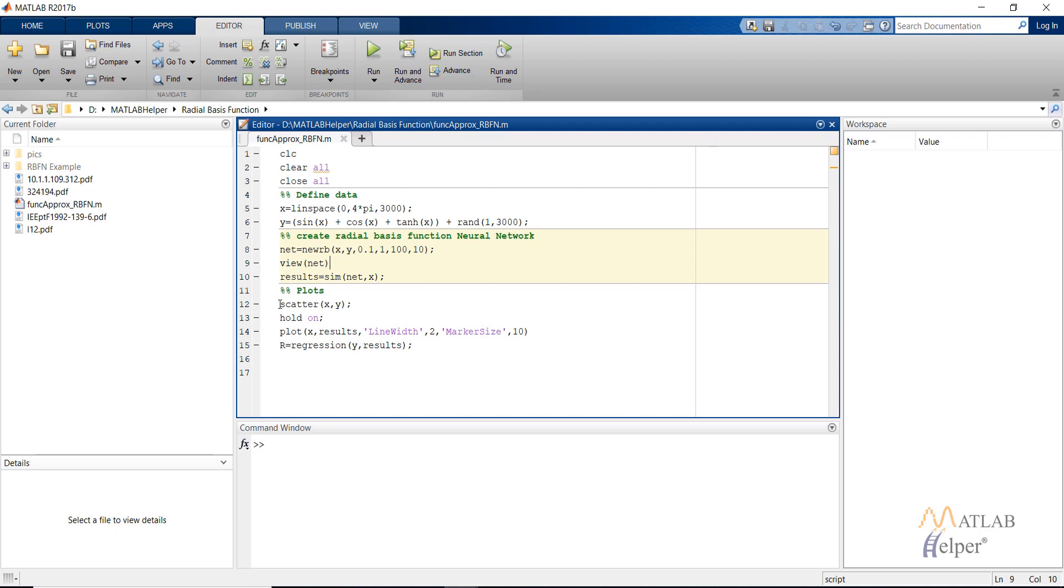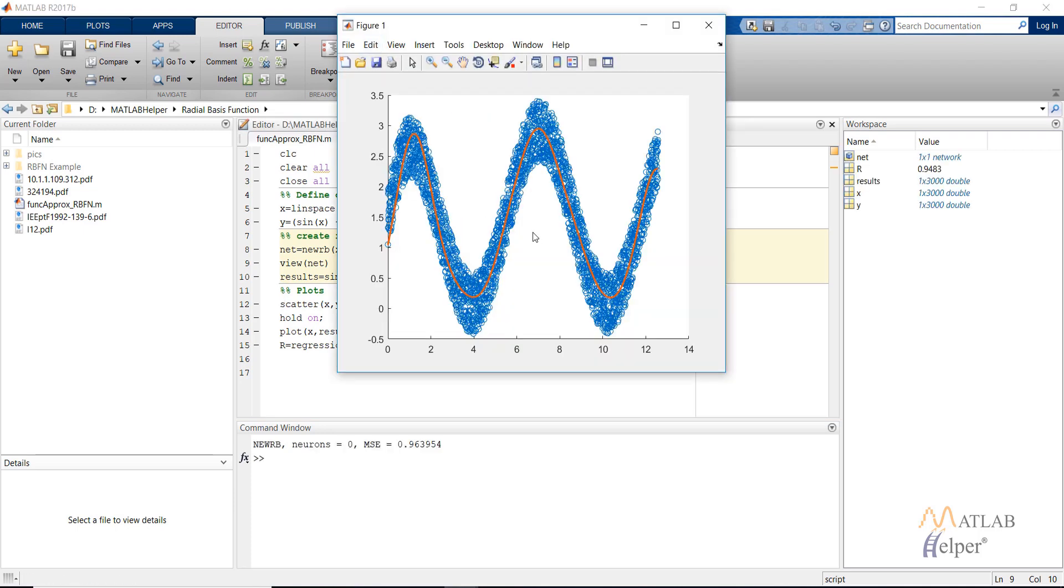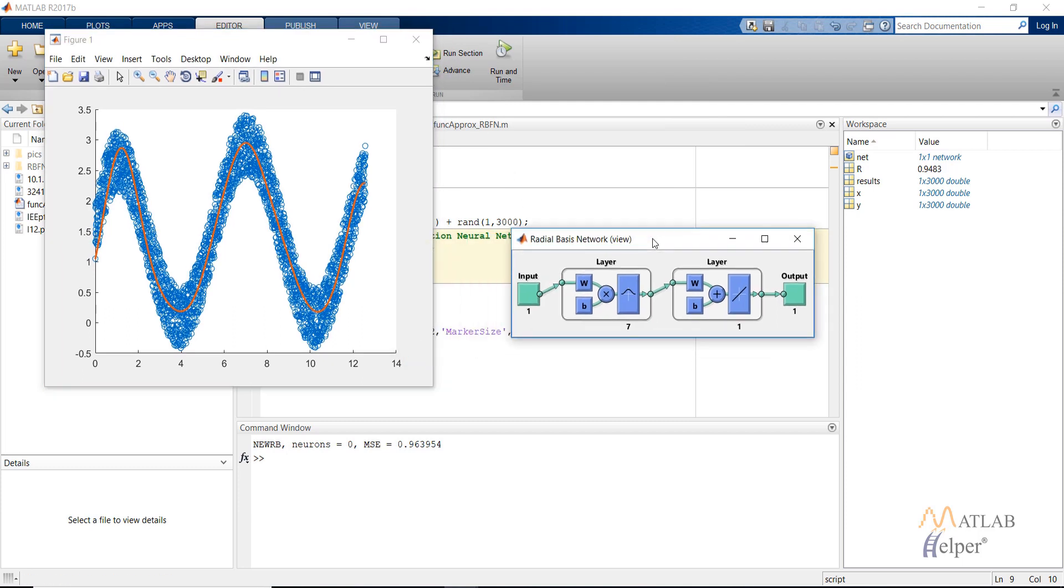Then we have our plots. Let's run this code. As you can see in the figure, the red line is a good approximation of our data points, and for this we have used seven neurons. We have one input and one output.